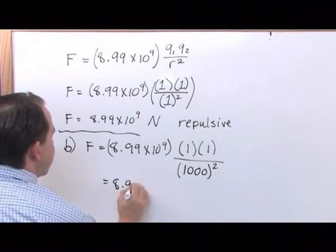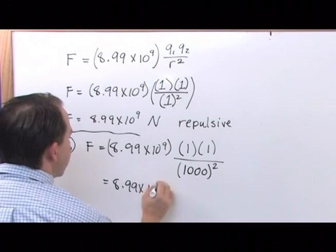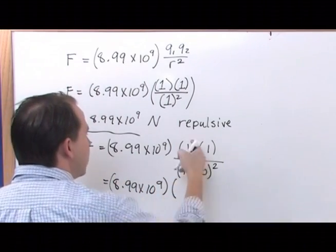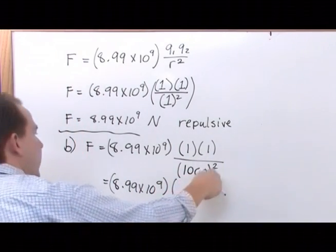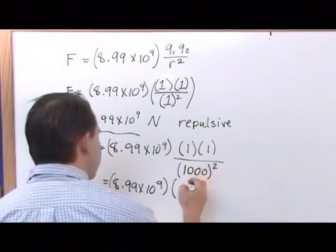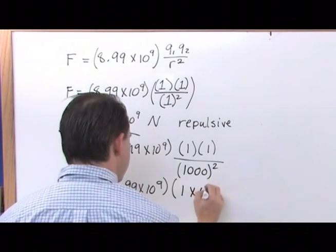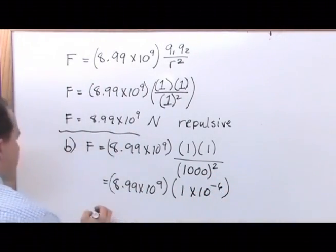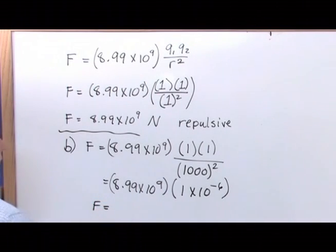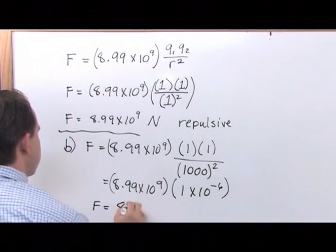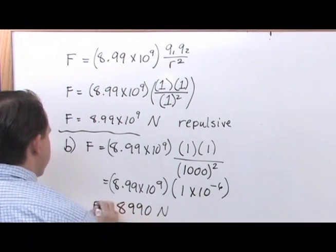So, you'll have 8.99 times 10 to the 9, and you'll multiply, when you do this division here, 1,000 squared. 1 divided by 1,000 squared is going to be 1 times 10 to the negative 6. And so, the force, when you do this multiplication, is going to be 8990 newtons.